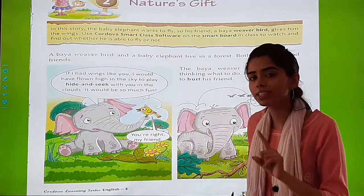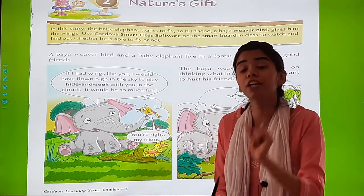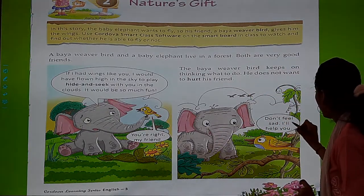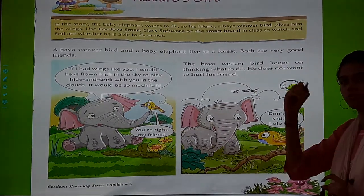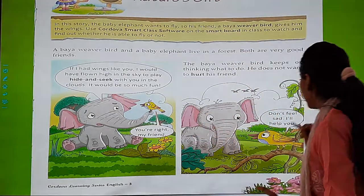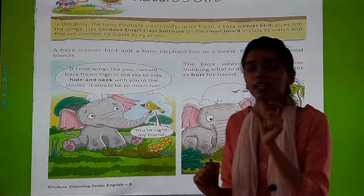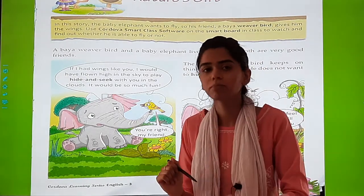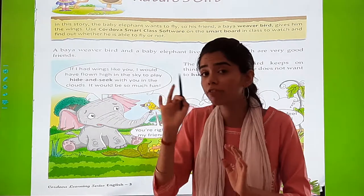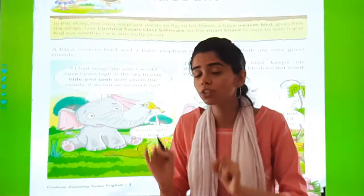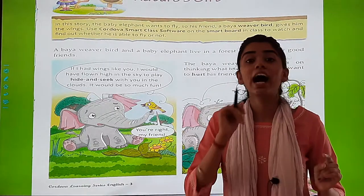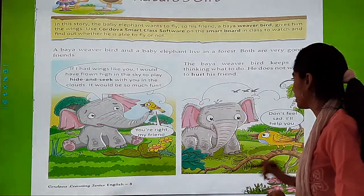Now children, I made a mistake — I said 'I will help you', but notice it is written as 'I' with an apostrophe and 'L', so we say 'I'll'. When it is written with an apostrophe like that, we say 'I'll'. If it were the complete word, we would say 'I will'. But here, what do we say? 'I'll help you.' Is that clear?